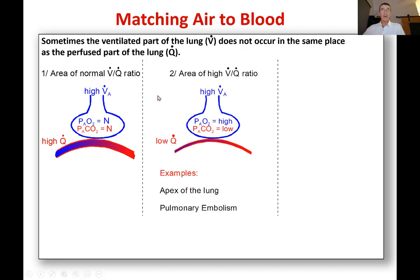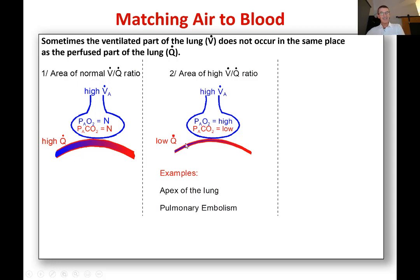If you had an area where there was high ventilation and low perfusion, because you've got lots of ventilation and very little perfusion, then the alveolar oxygen pressure there is going to be high and the alveolar CO2 pressure there is going to be low. The reason is because there's so much ventilation bringing in fresh oxygen and very little perfusion bringing in carbon dioxide. An example of where that might happen is in the apex of the lung — very little blood supply gets up to the top due to gravity, so you might have more ventilation there and less perfusion.